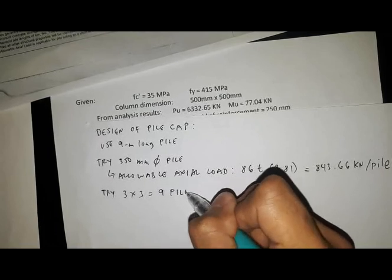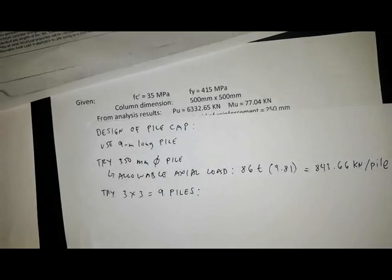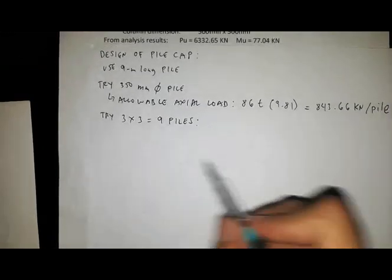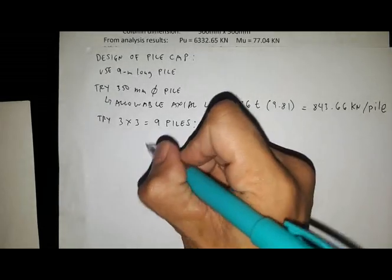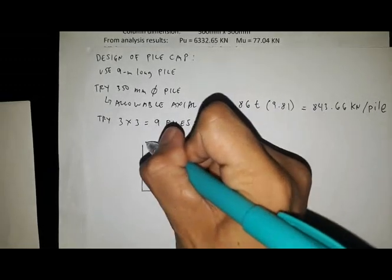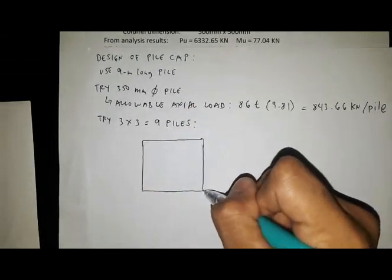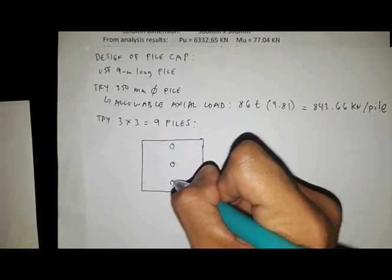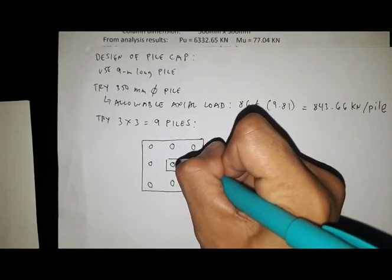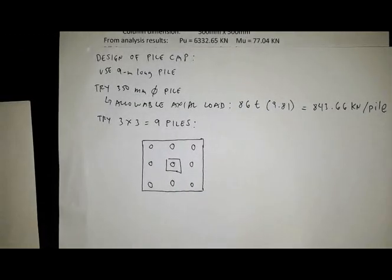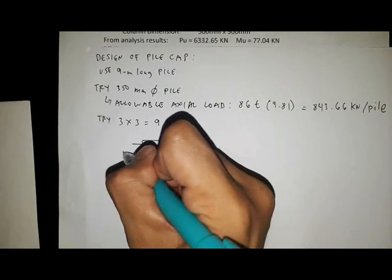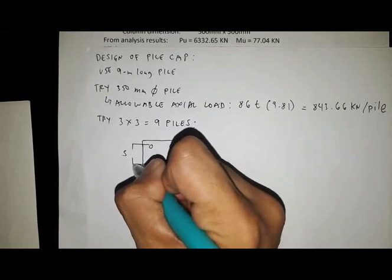Now let us try 3 by 3 equals 9 piles. This is a 3x3 configuration, so the pile cap in plan view is most likely a square pile cap. These are the piles and this is the column.